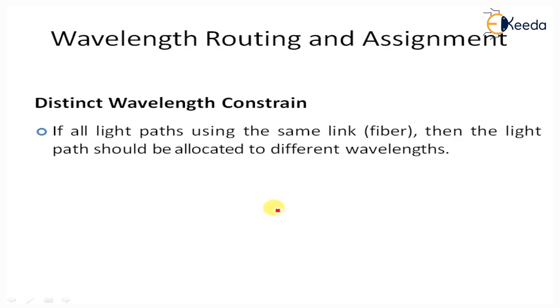The distinct wavelength constraint states that on the same link or single fiber, light paths should be allocated to different wavelengths in the network.